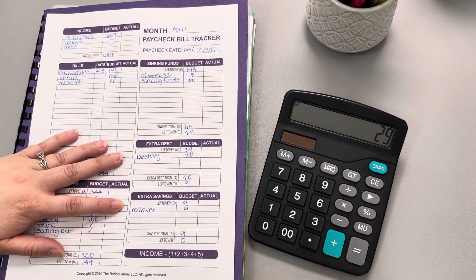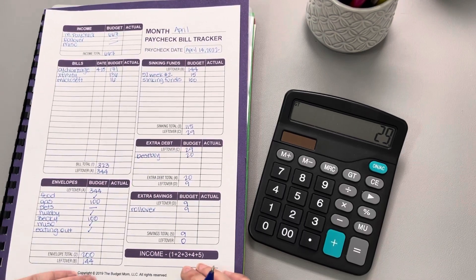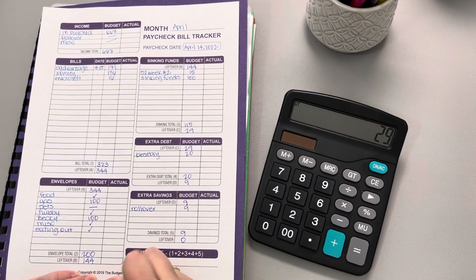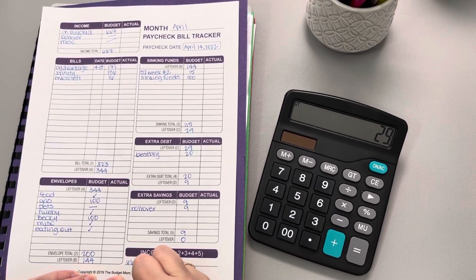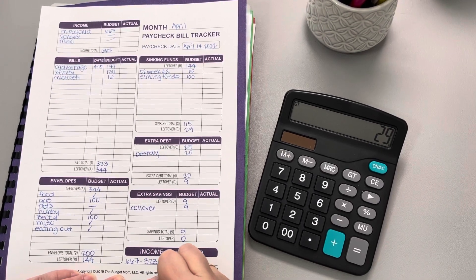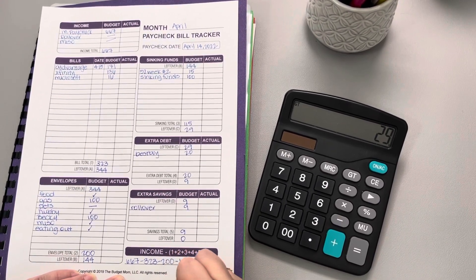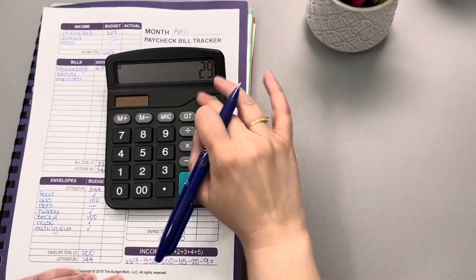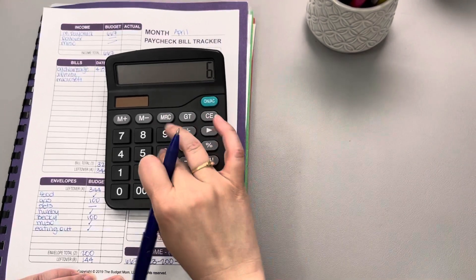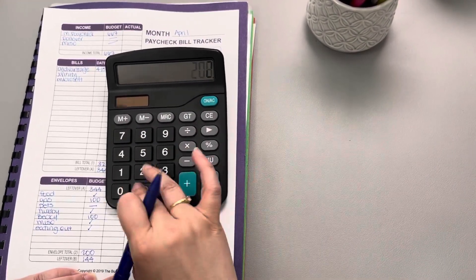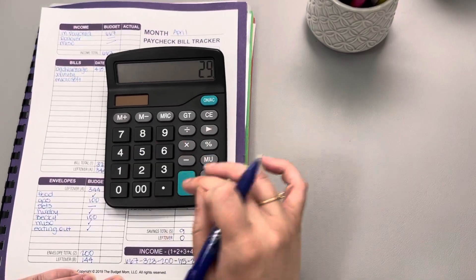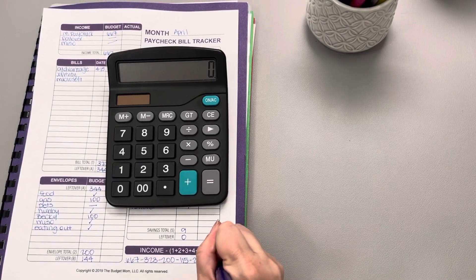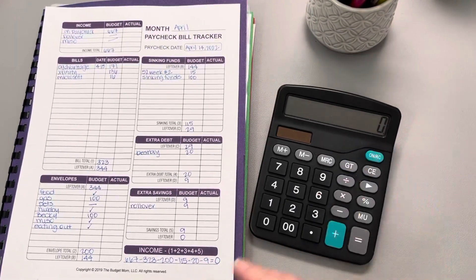And that brings us down to a zero base budget. So let me go ahead and just check my math. So it's going to be 667 minus 323 minus 200 minus 115 minus 20 and minus 9. And that should equal zero. So let's go ahead and do the math. 667 minus 323 minus 200 minus 115 minus 20 minus 9 gives us that zero base budget. So we are all set.